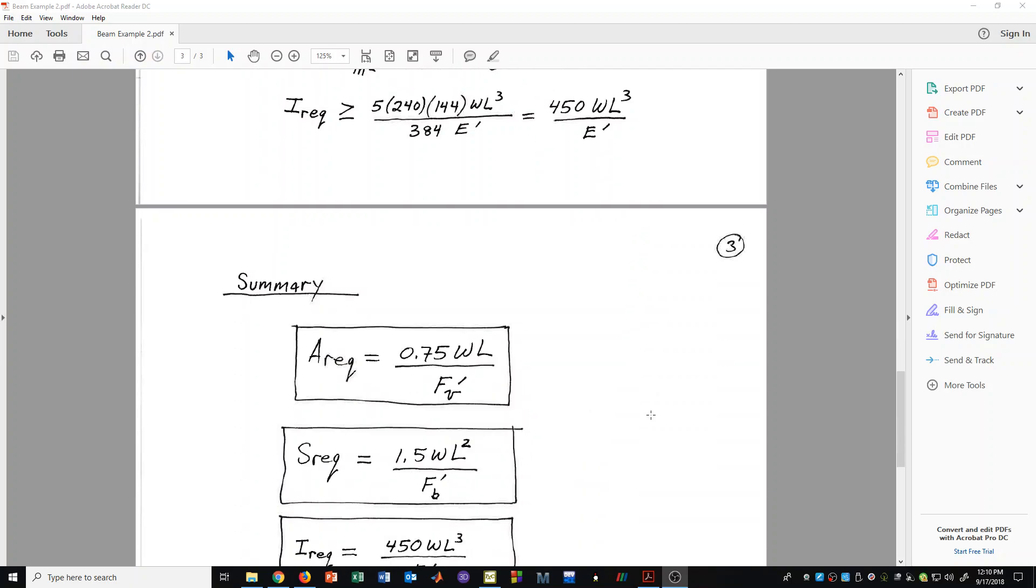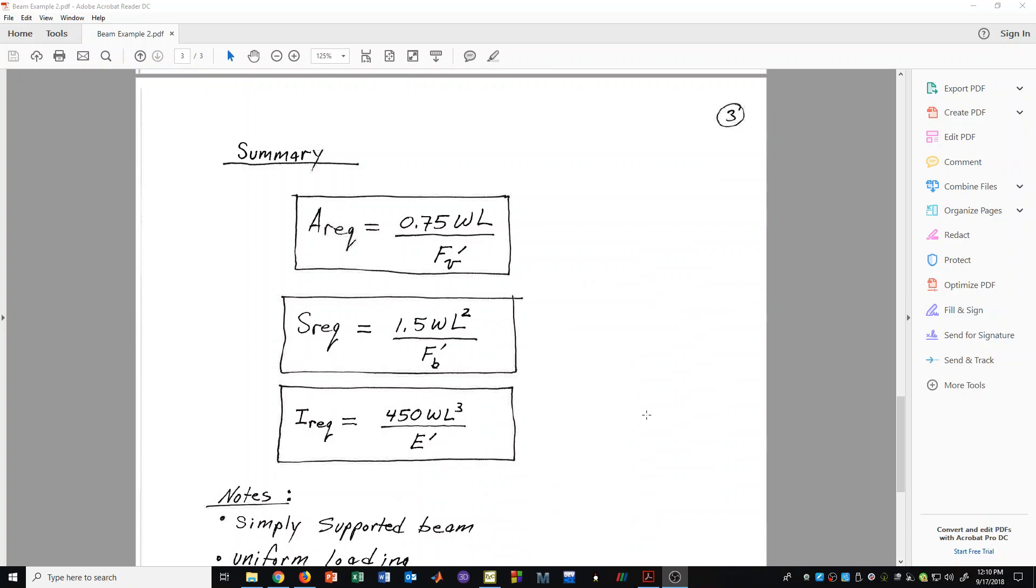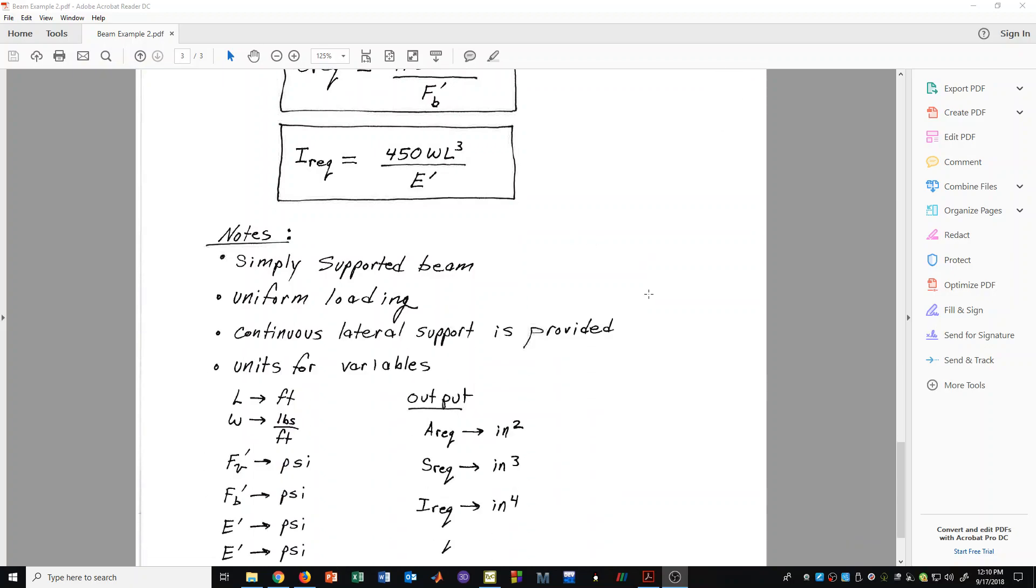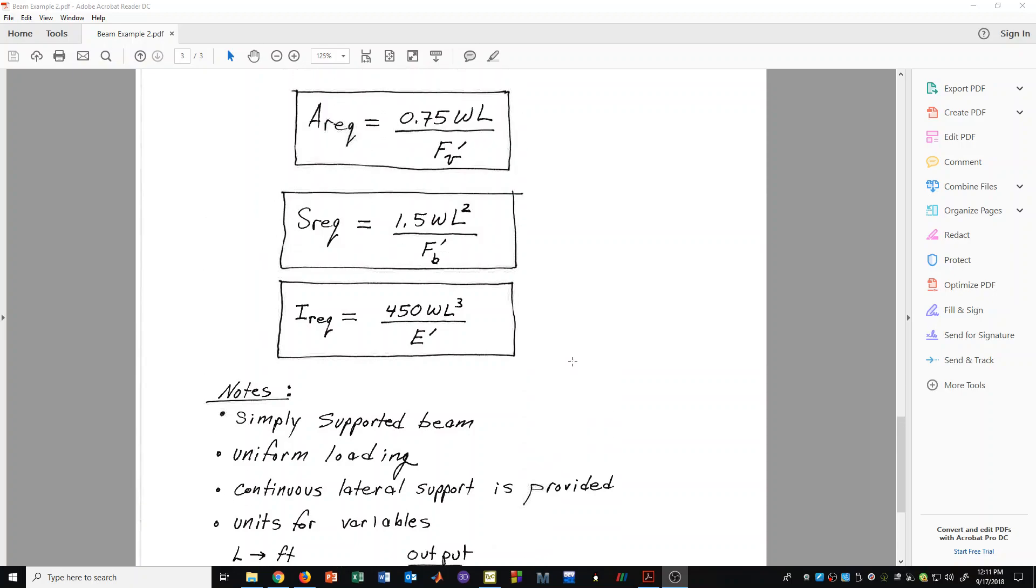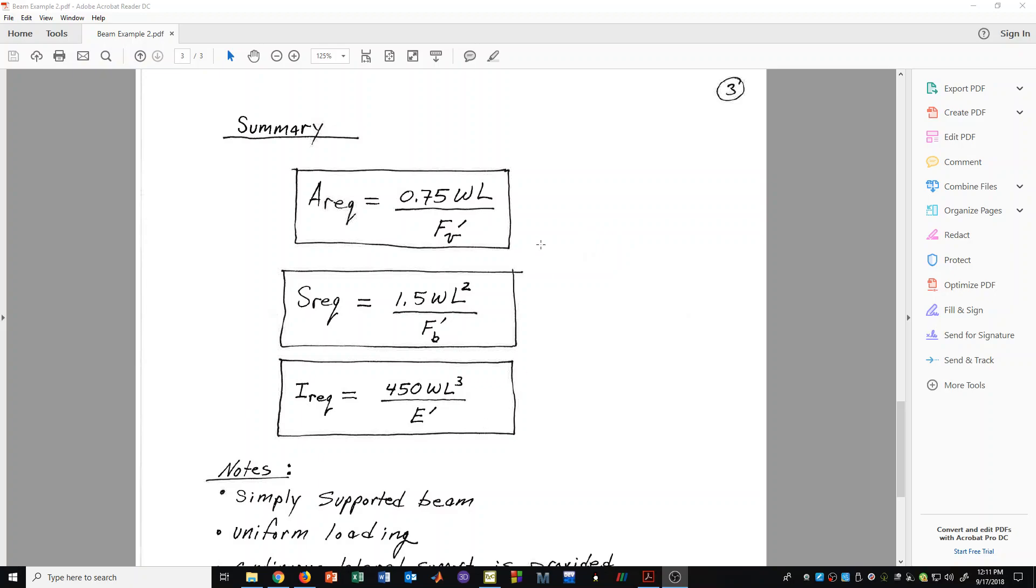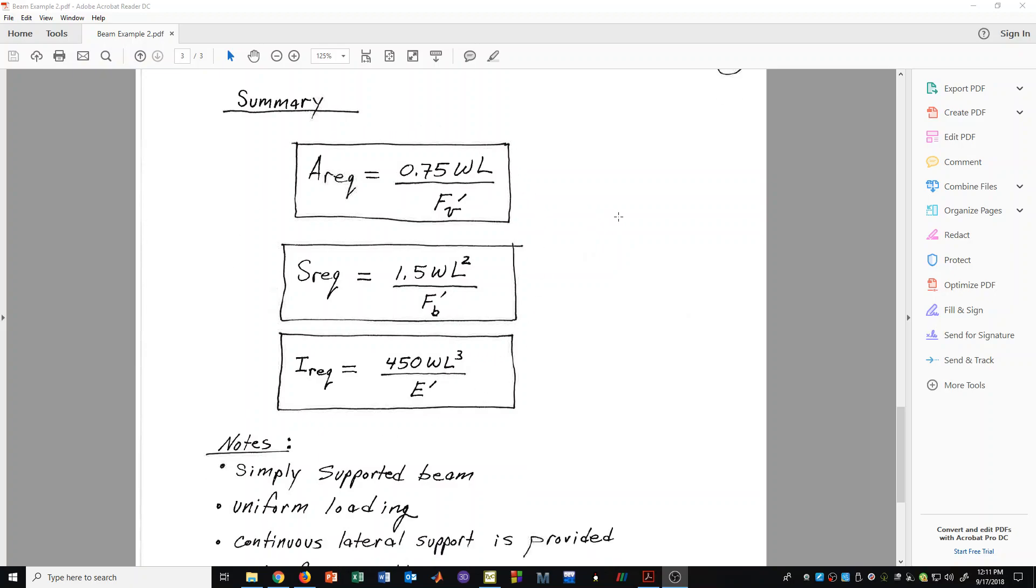Now, let's summarize what we have done. We have found a formula for these three section properties for the beam: Area, section modulus, and moment of inertia. These formulas are set up specifically for a simply supported beam with a uniform load on it. We have also set this up in such a way that we can put in units for W of pounds per foot, length in feet, the stresses and modulus in PSI units, and the output will be in inches squared, inches cubed, and inches to the fourth.